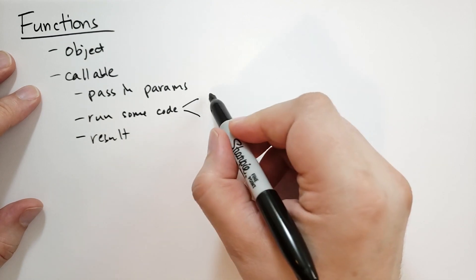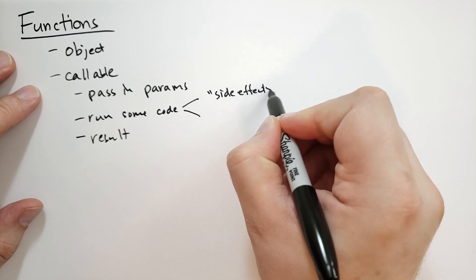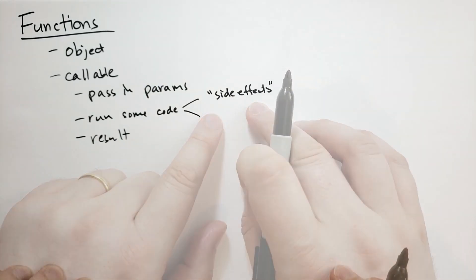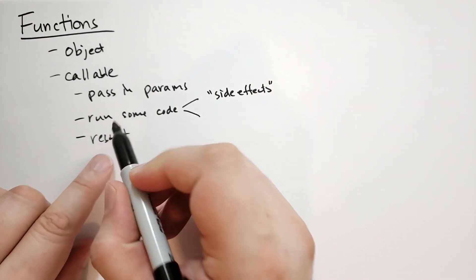So this code, it could have what we call side effects. So it may modify some of the other things that are in memory. And then it returns the result at the end.